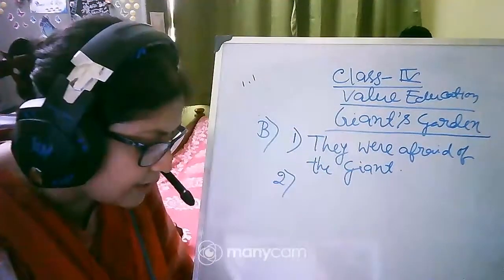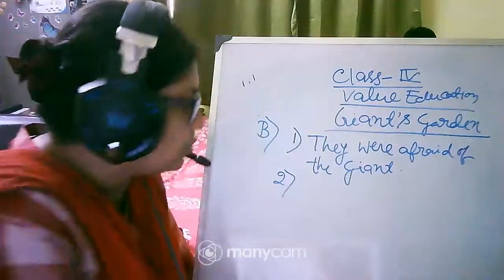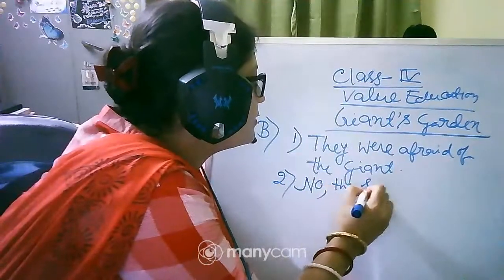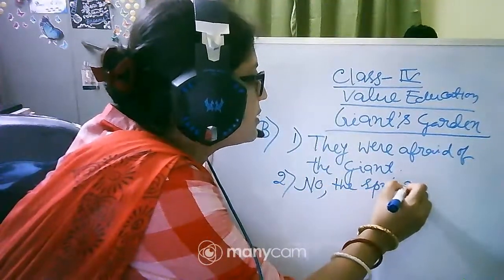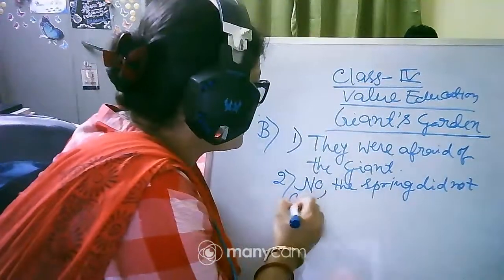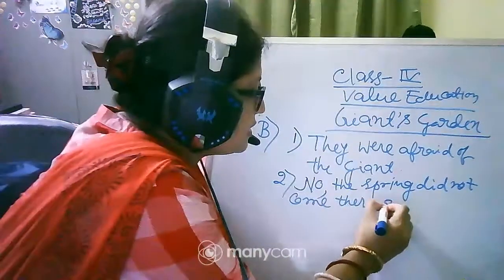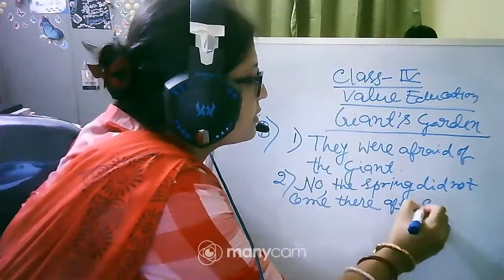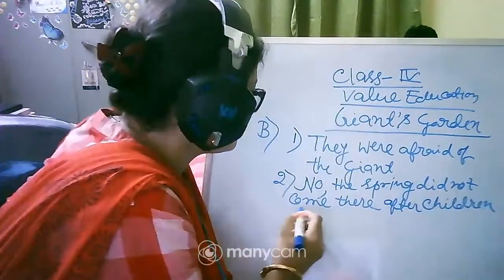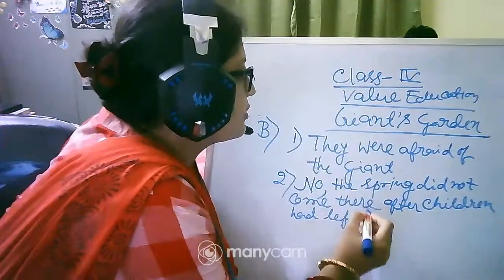Number two, did spring come to the garden after the children had left? No, the spring did not come there after the children had left the garden.